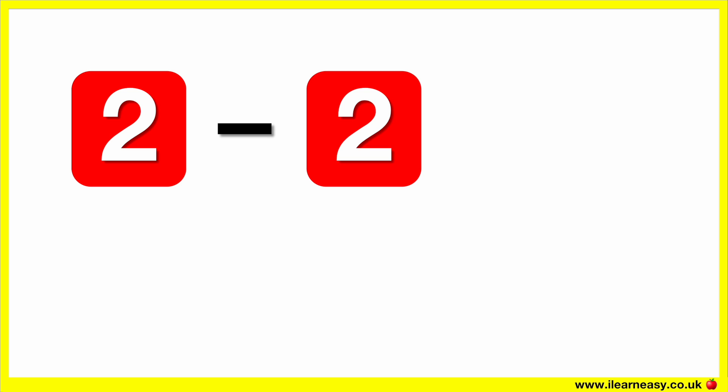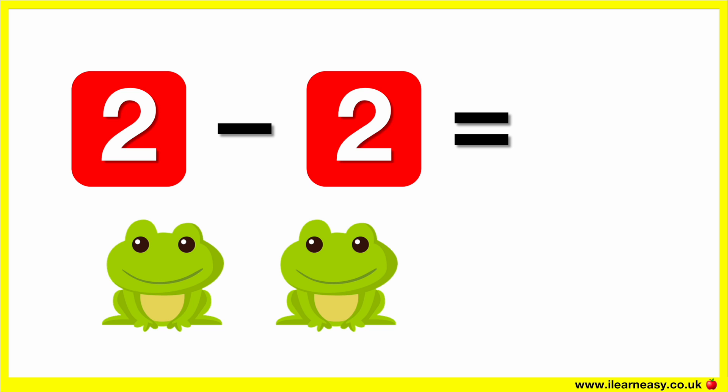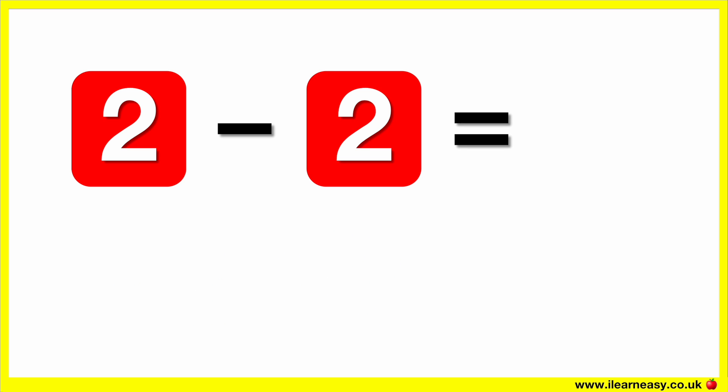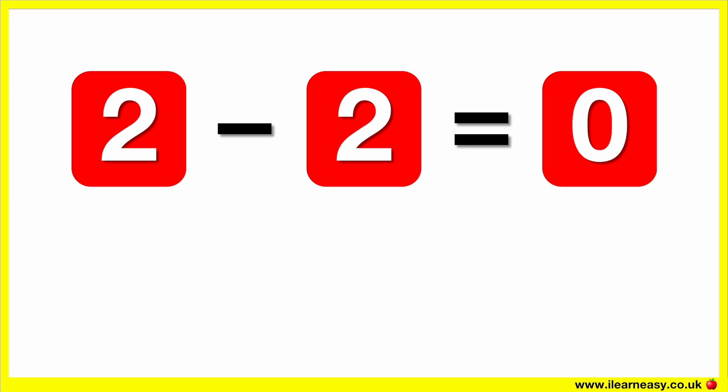Two minus two equals. Here are two frogs. Let's take away two frogs. Now there are zero frogs. So, two minus two equals zero.